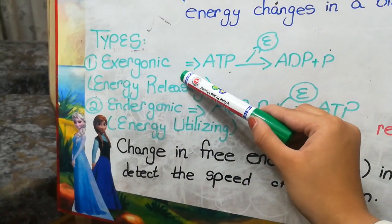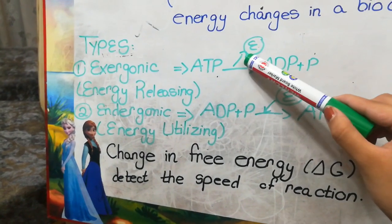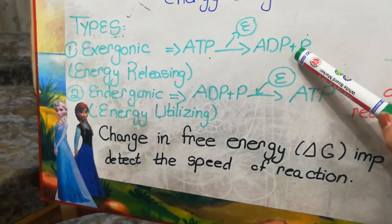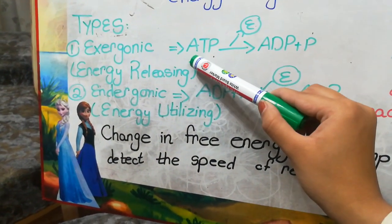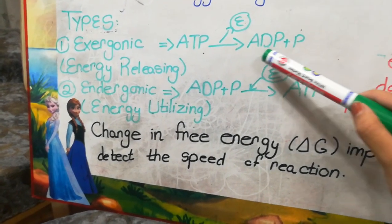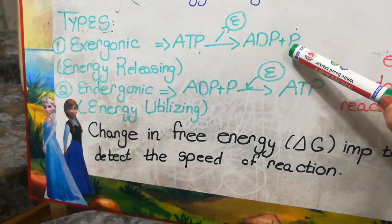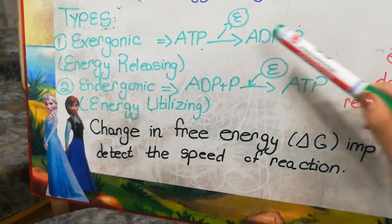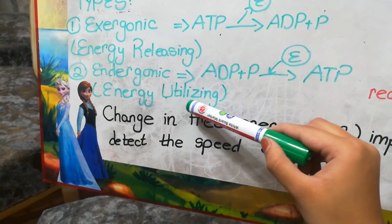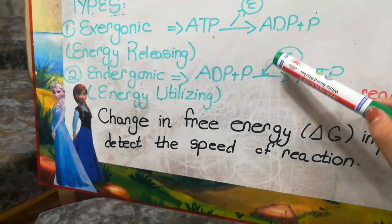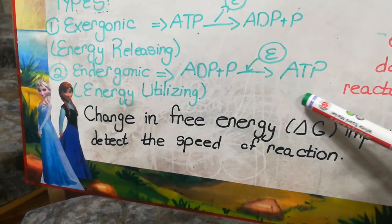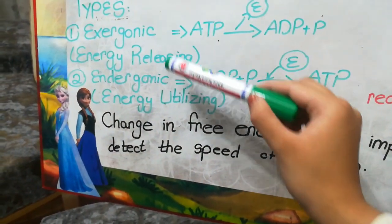An exergonic reaction is where the energy is released. We do not need the energy — the product will be broken down into its reactants. Like ATP, it breaks down by releasing energy into adenosine diphosphate and phosphate. Endergonic is where the energy is utilized — the reactants will combine with the help of energy to form the product, that is ATP. These are the two types of reactions.